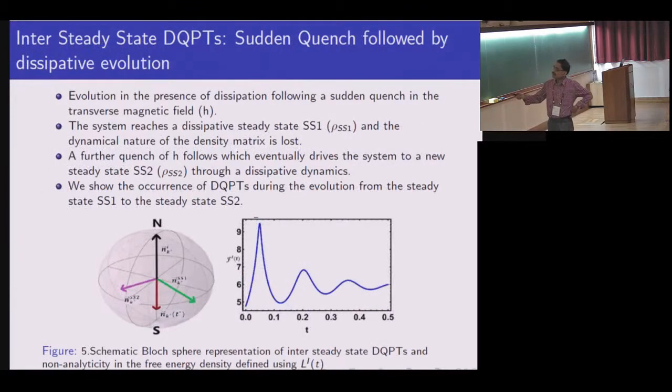I show it on a Bloch sphere: if this is your initial state, you do some dissipative dynamics following a quench—change the field, let the system evolve under a dissipative environment. It goes first to a steady state—Markovian dynamics guarantees you reach a steady state. Then you do a further quench to reach a second steady state. In between you find a non-analyticity. Here, the evolved density matrix is completely orthogonal to the initial density matrix I started with, and you can find that non-analyticities are present.